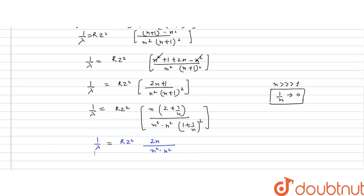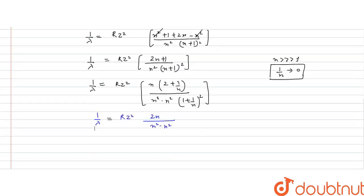It means, we have 1 by lambda is equal to Rz square into 2n upon n4, and this n is cancelled, so we have 1 upon lambda equals to Rz square into 2 upon n cube.